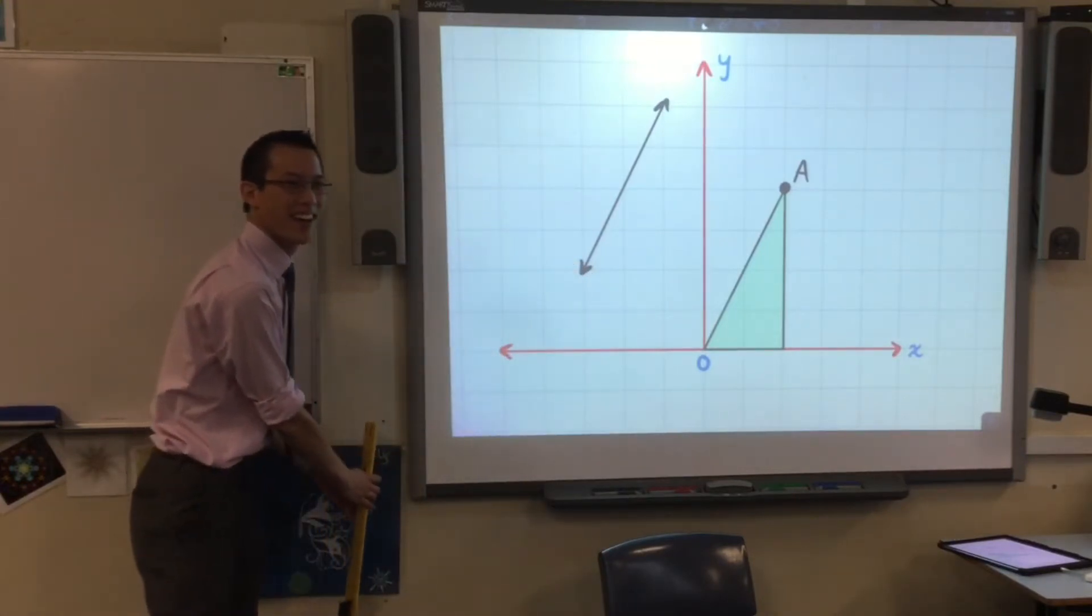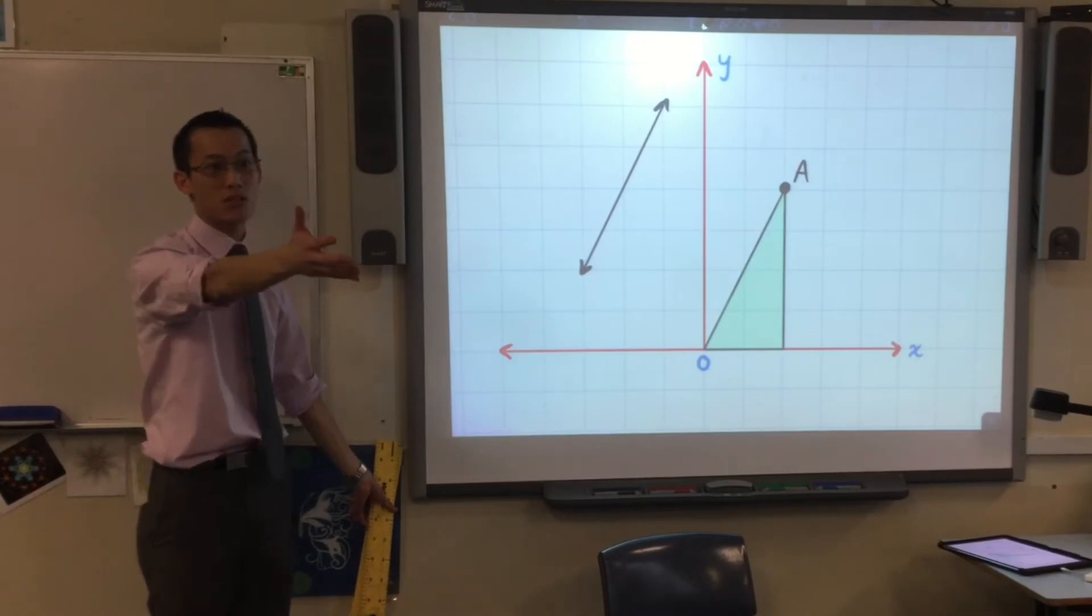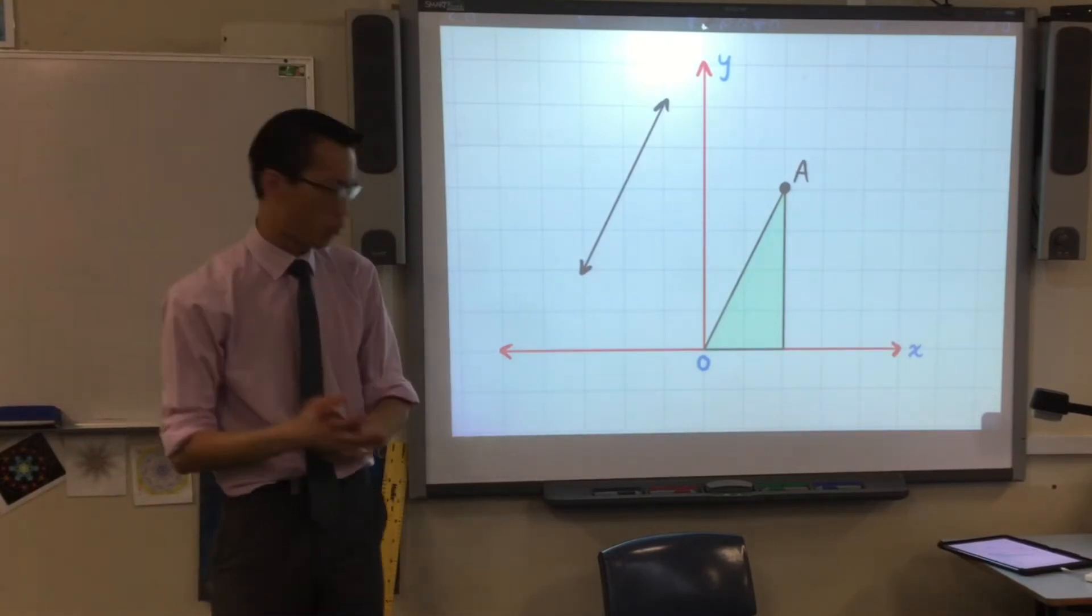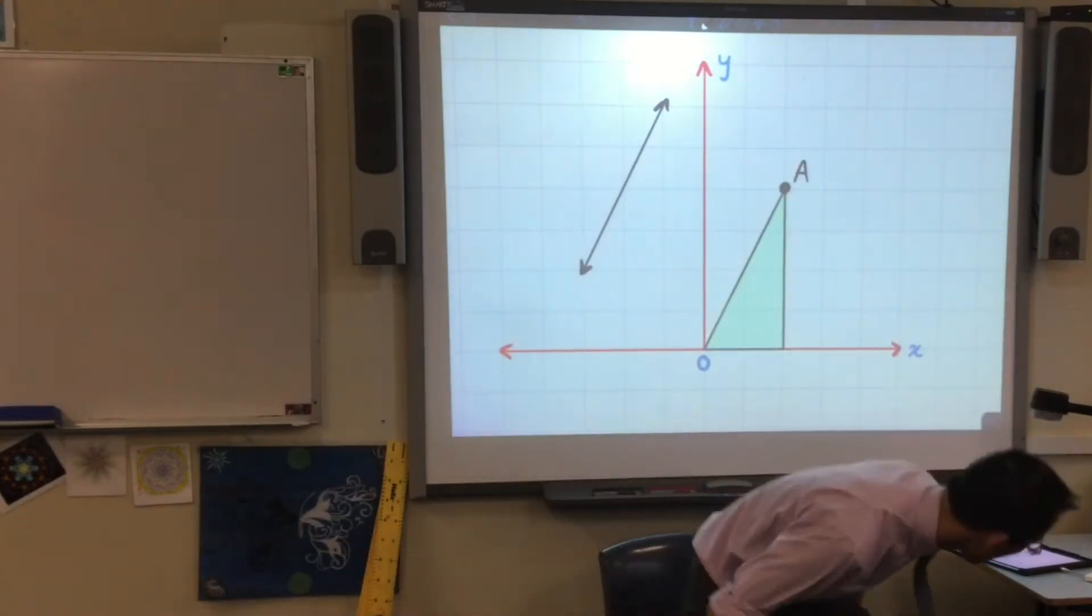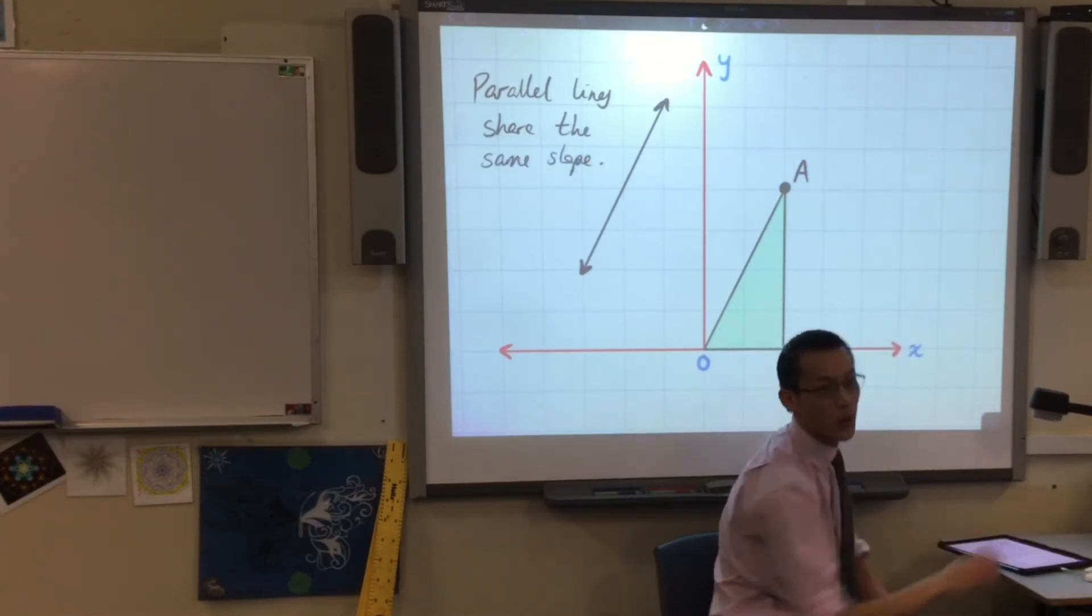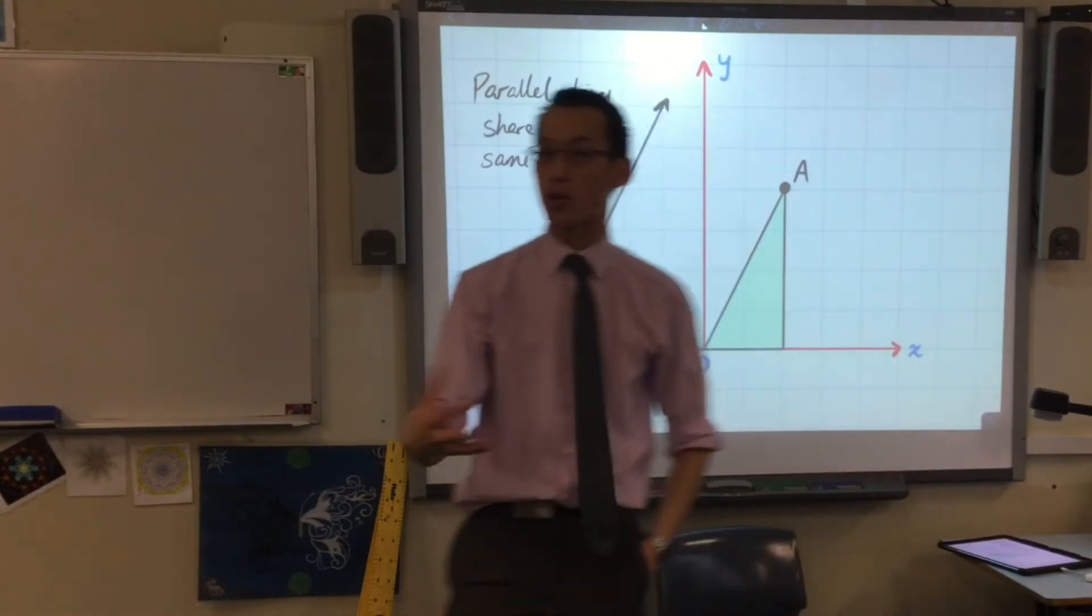It's the same slope. Okay, so this is a more technical definition that gets at something we've been using recently. And I'd love you to all write it with me, actually. Parallel lines share the same slope. Slope, of course, being a synonym for gradient.